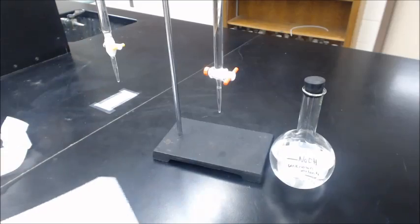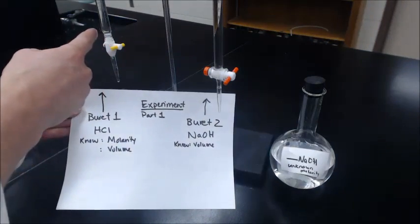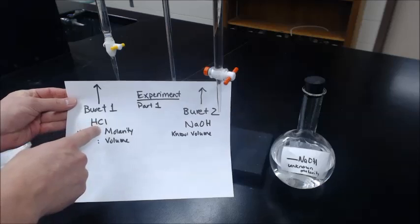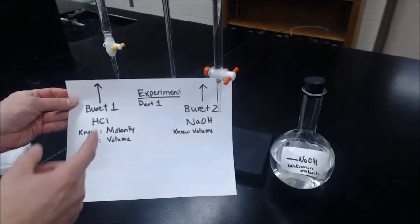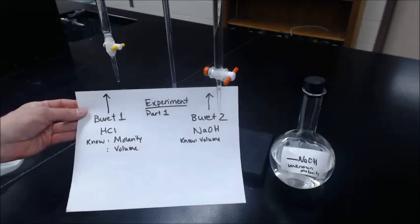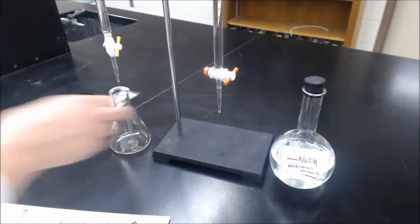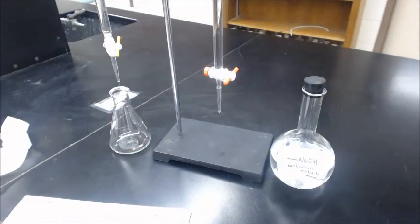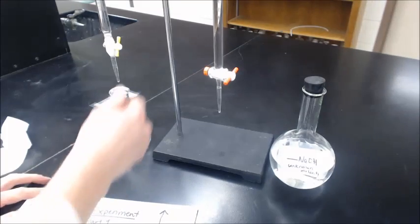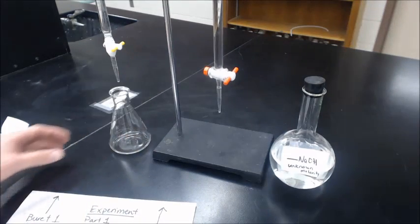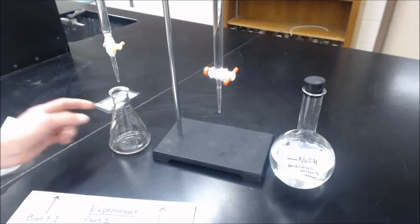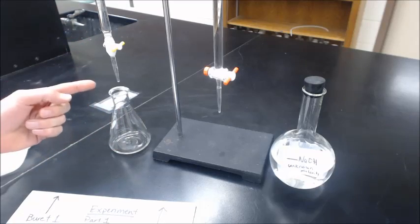In this other burette, you're going to have hydrochloric acid. You're going to know the concentration, the molarity, and you're going to dispense out a known amount of it into another Erlenmeyer flask. Somewhere around 25 milliliters, but measure the volume precisely. So you're going to know the volume and the molarity.